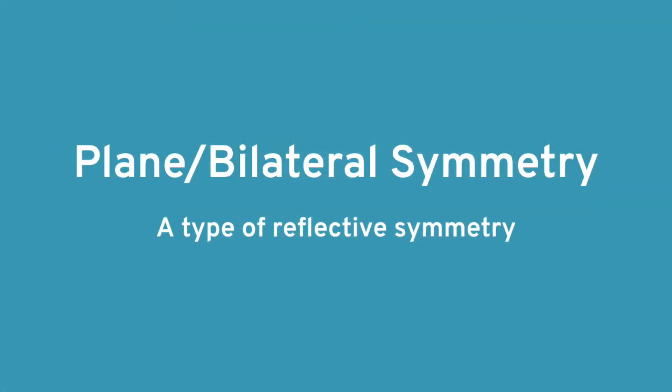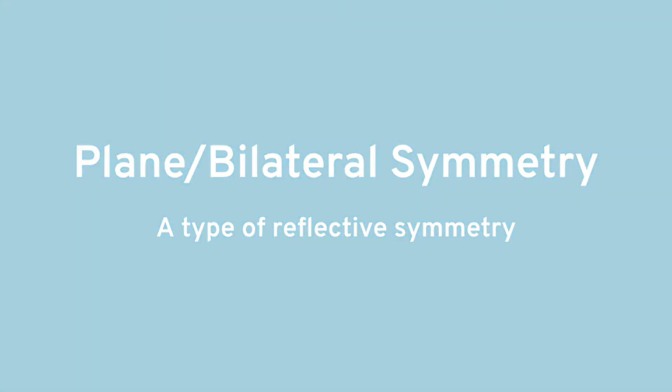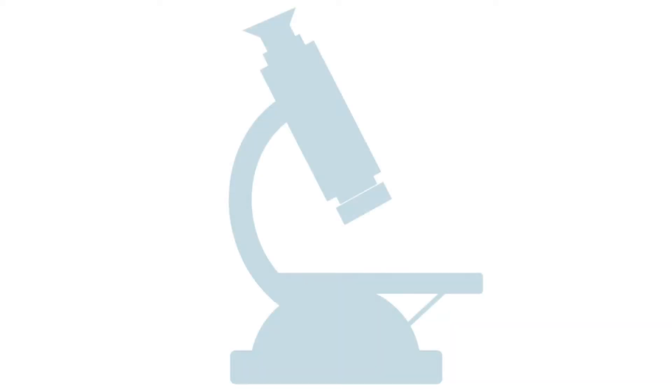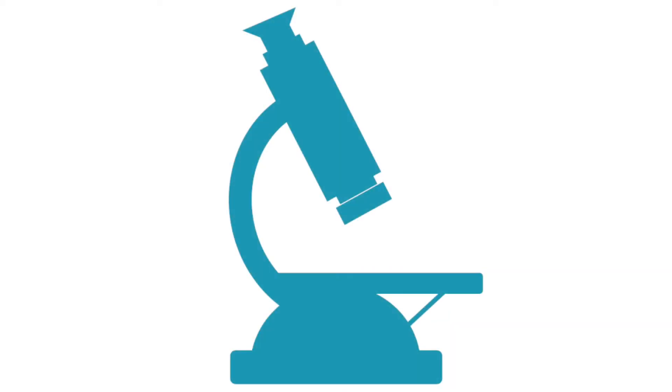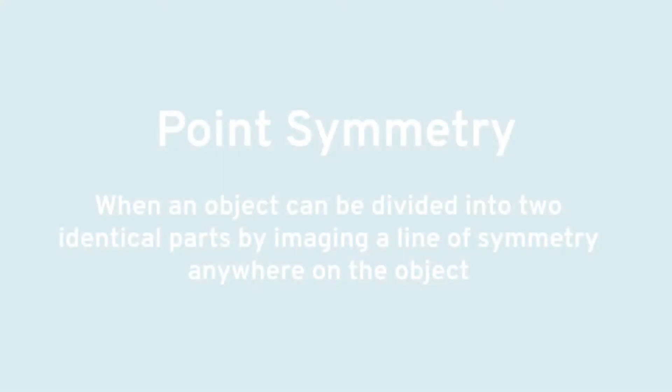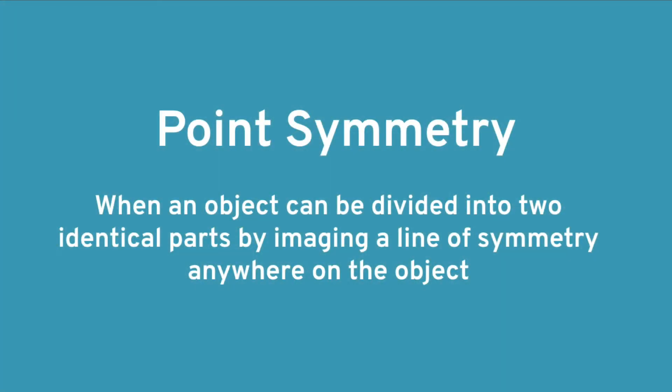All these examples show plane or bilateral symmetry, which is a type of reflective symmetry. The other type of reflective symmetry is point symmetry. You can't see point symmetry without a microscope, but it is still out there in nature. Point symmetry is when you can divide an object into two identical parts by imagining a line of symmetry anywhere on the object.